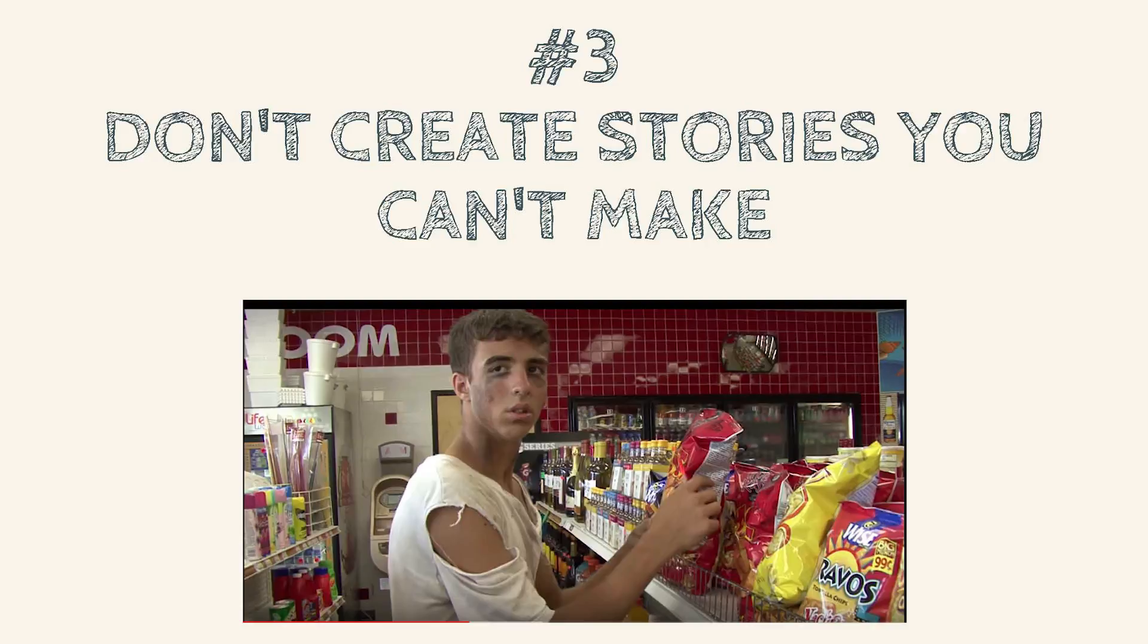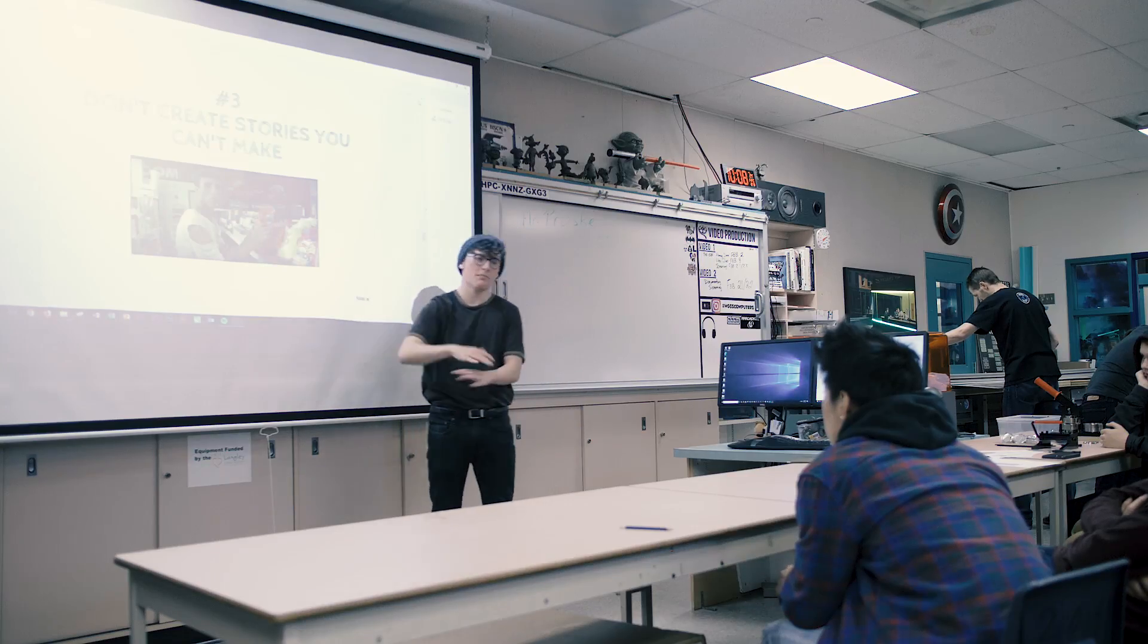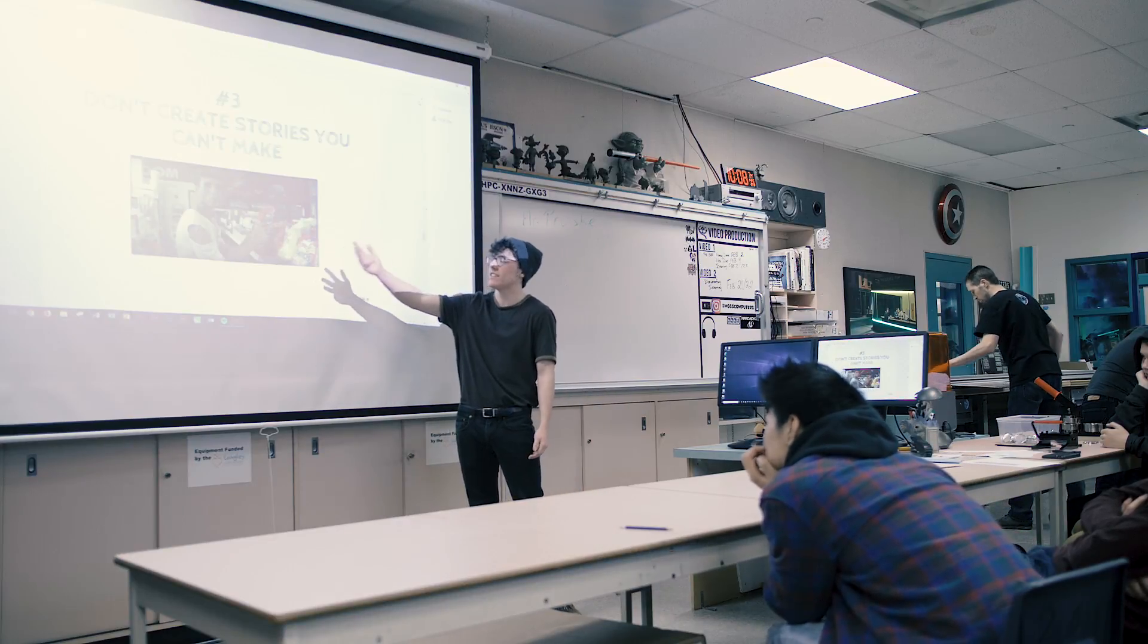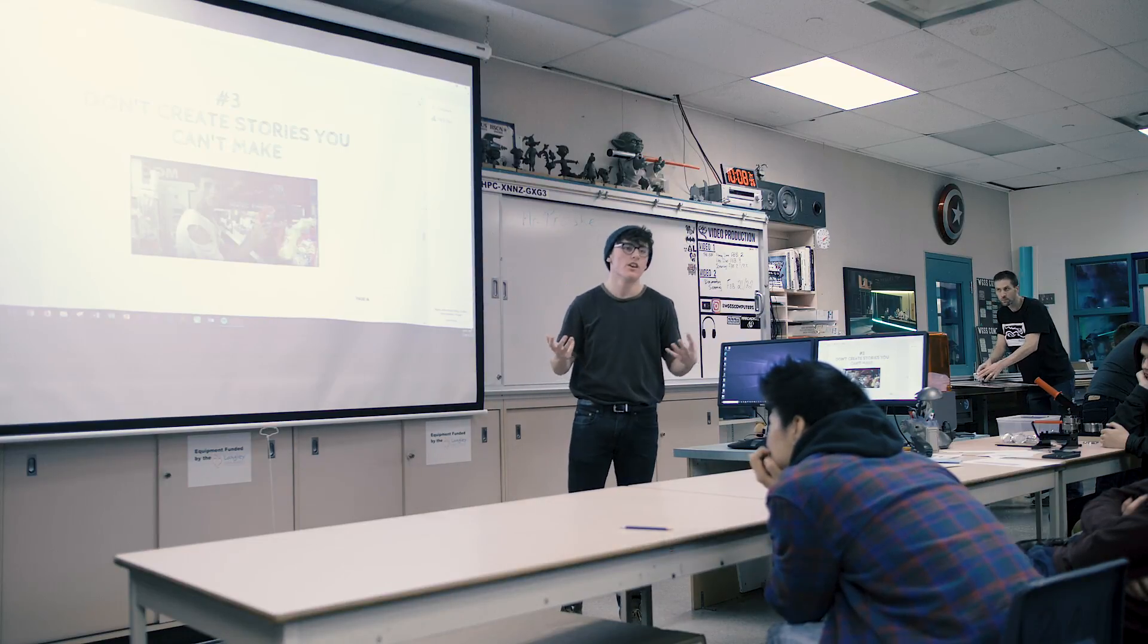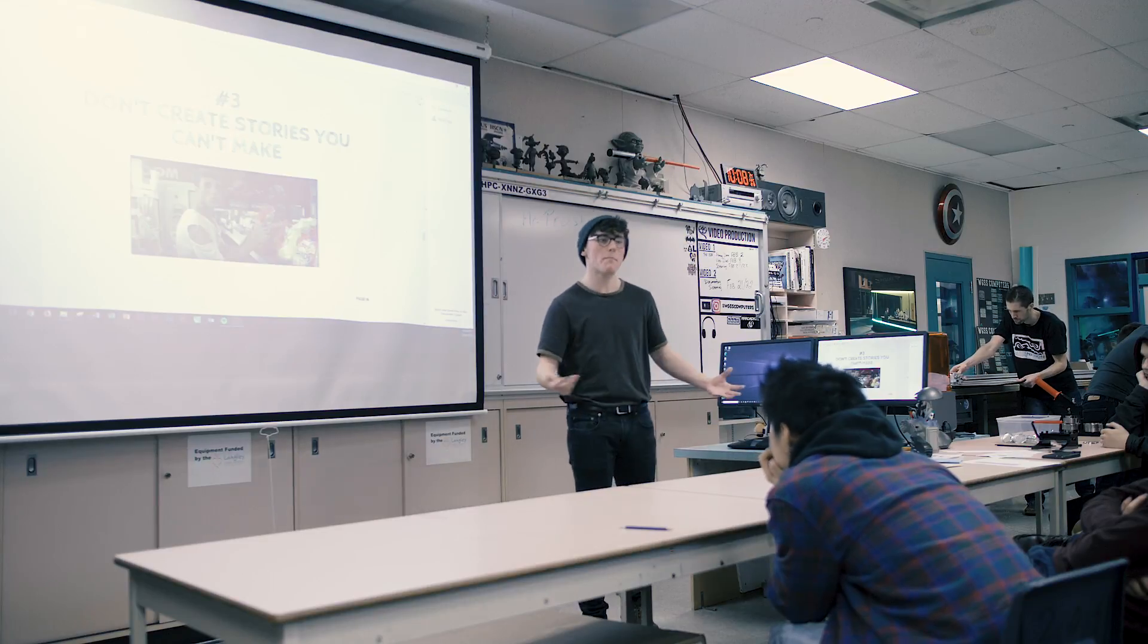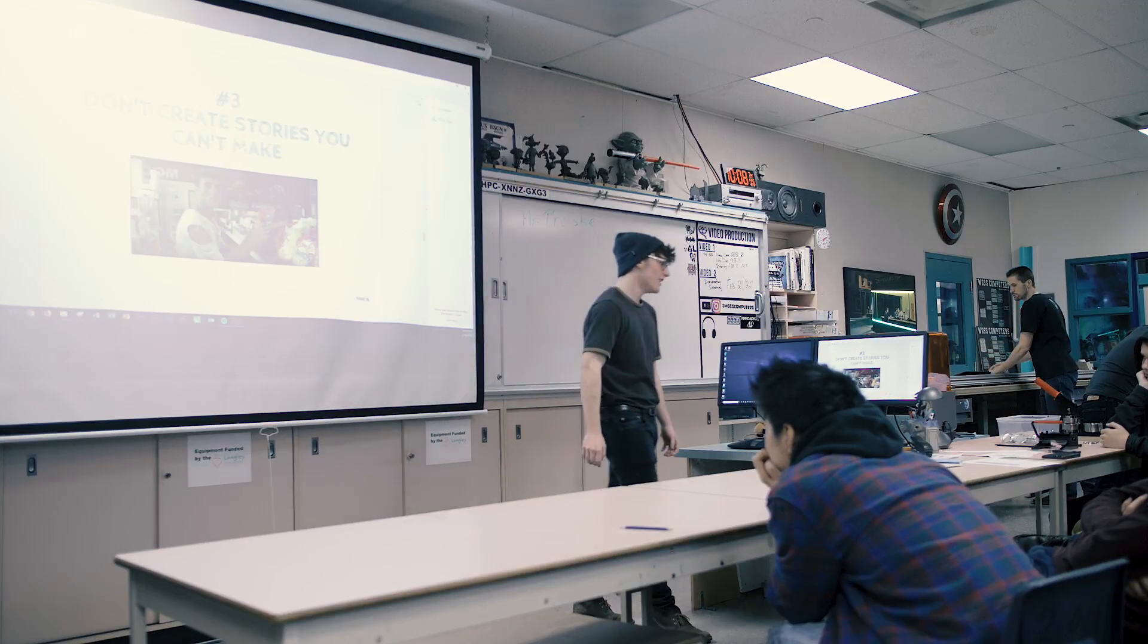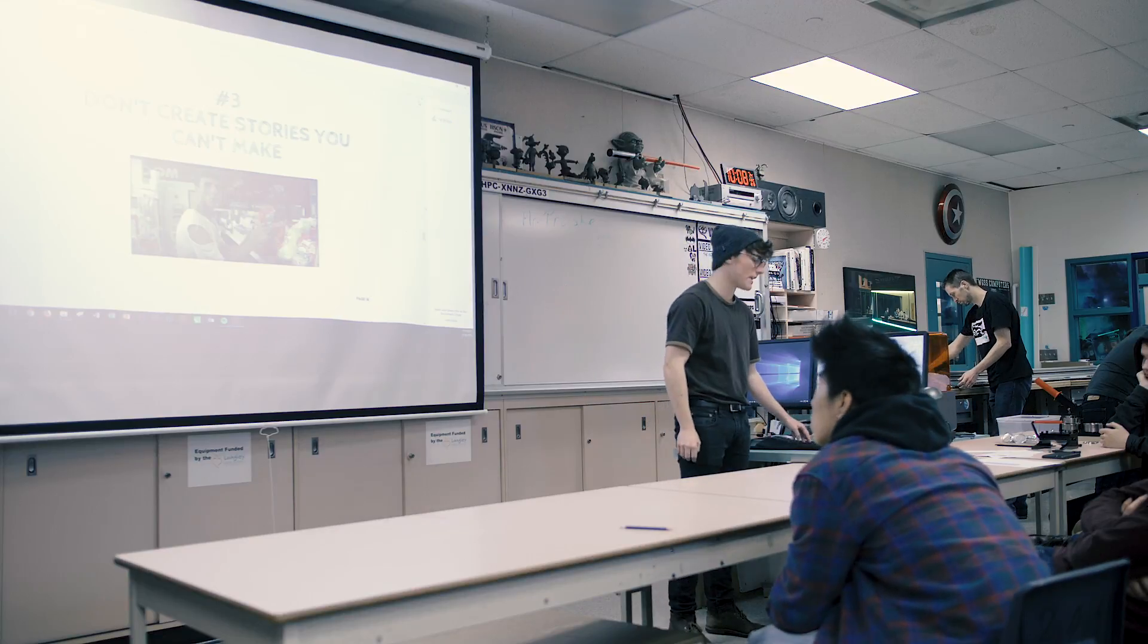Number three, don't create stories you can't make. This is a hilarious film that I watched about homeless youth, and this guy was completely just out of his environment. You see, this guy's got tattered shirts. He looks like he's been living in the ghetto for years, and he's in the suburban white neighborhood. So just don't make a Western, for example, if you don't have a million dollars to spend on it. Right? Work with your environment. Don't do what this guy did. And if anyone has any questions, just put up your hand if I'm talking too fast or something like that.